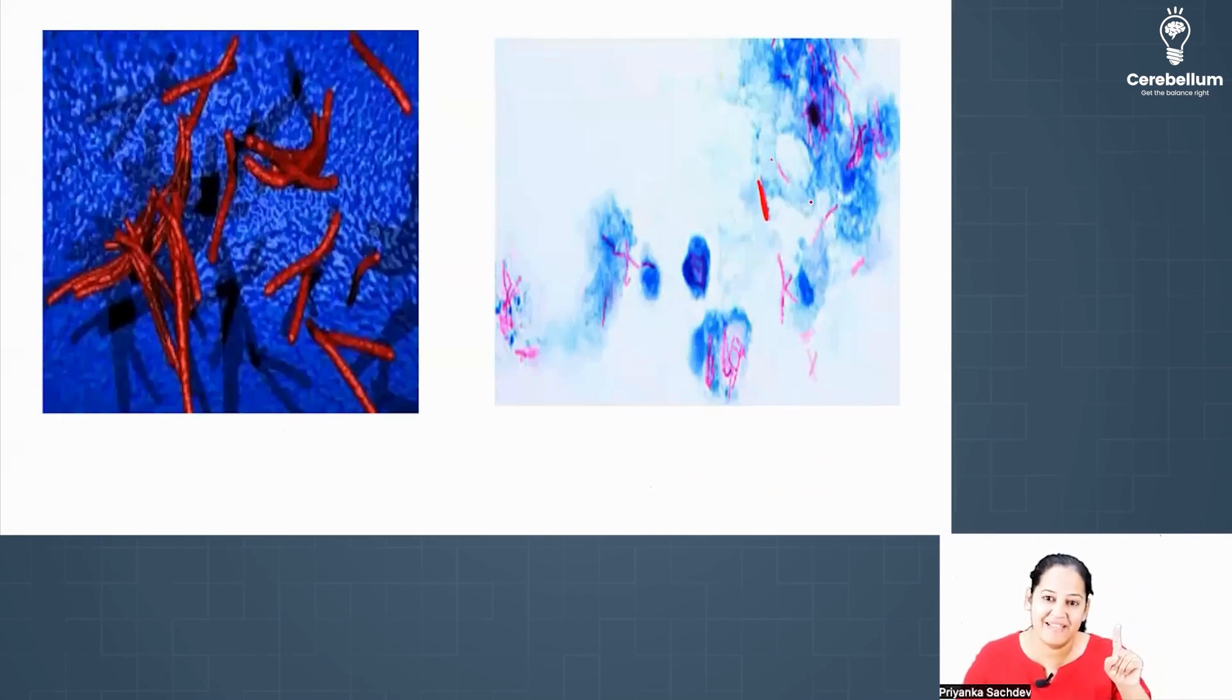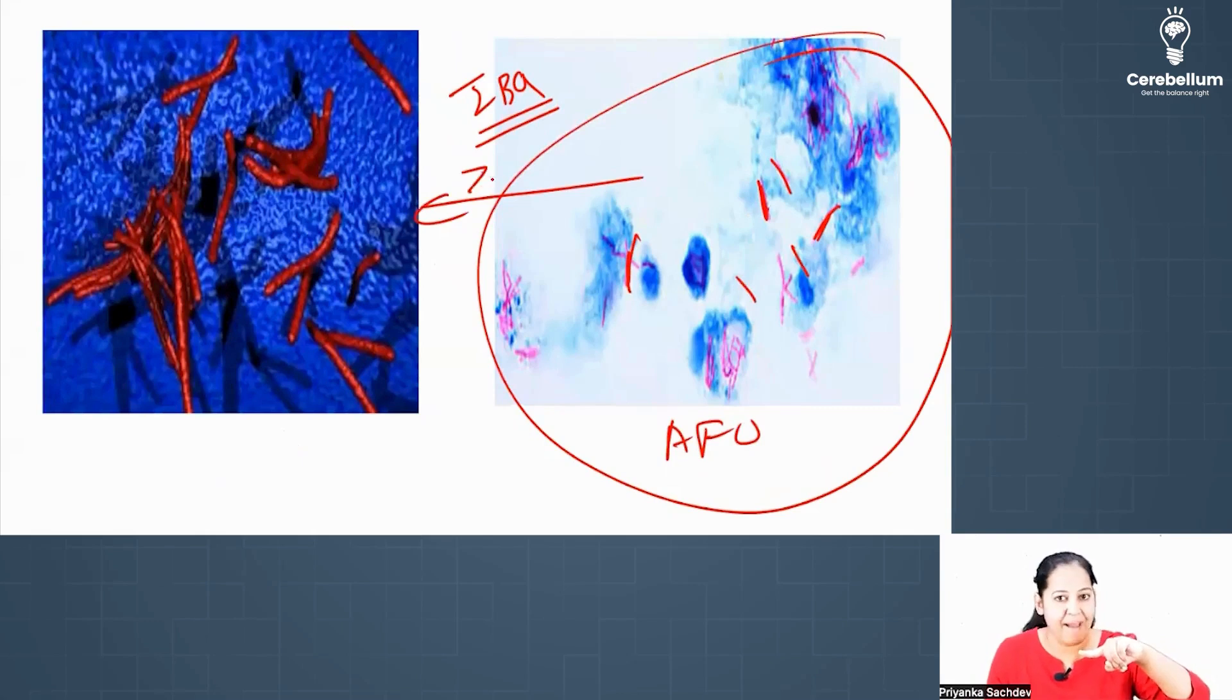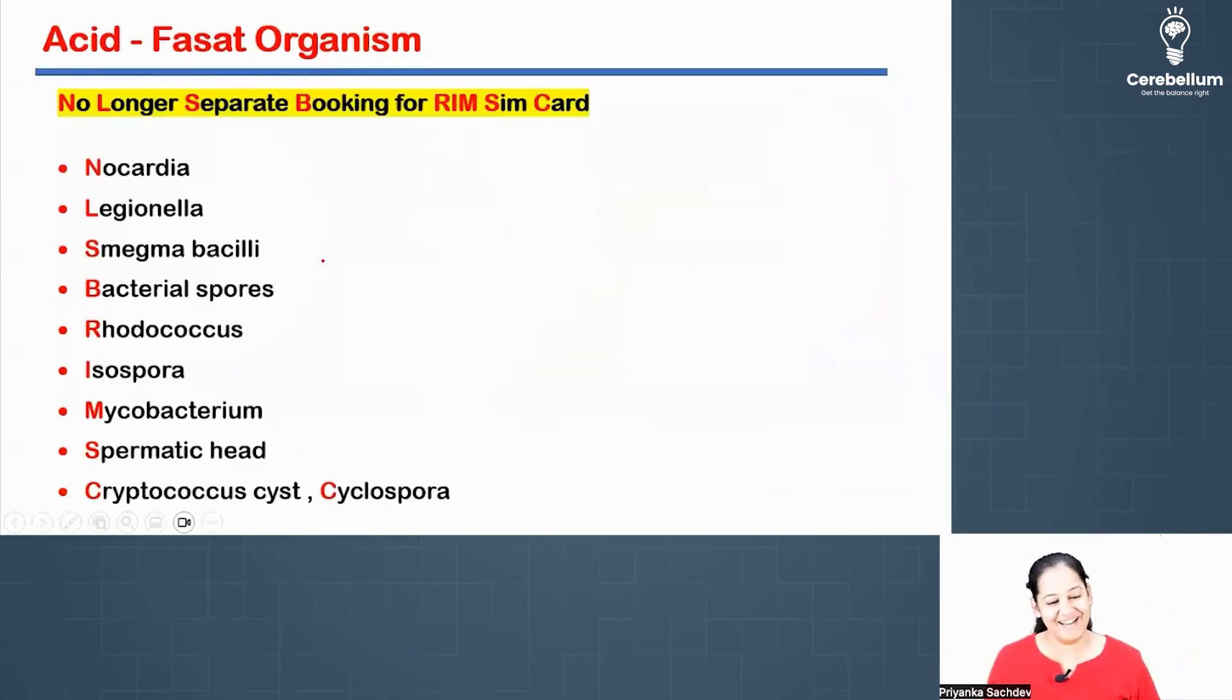You can see the red bacteria, it's an image-based PYQ in your exams, NEET PG. See the red bacteria on a blue background. You say, ma'am it's AFO because the red bacteria on a blue background, it's AFO. See, this is the magnified version. Another red bacteria on a blue background, the red bacteria on a blue background. Got it?